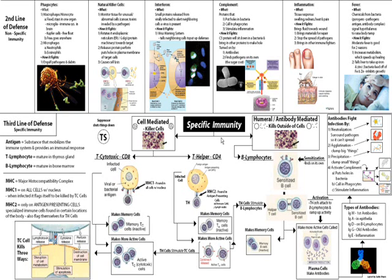The TH cell will again make memory cells, which will lay in wait for the next time that pathogen comes around, and will also make more active cells. Those active cells will release cytokines, which are essentially chemical signals that will talk to TC cells and also to B lymphocytes.